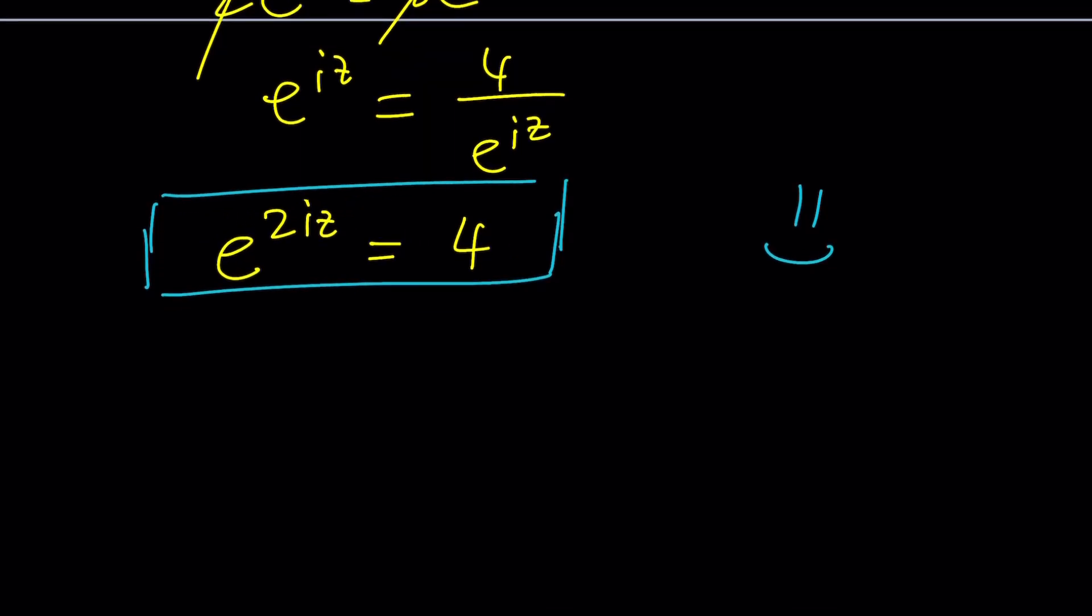Now, we can go in different directions from here. Let me tell you. You can square root both sides, and you can kind of write it as, okay, if e to the 2iz is 4, then e to the iz can be 2 or negative 2. Would you agree?